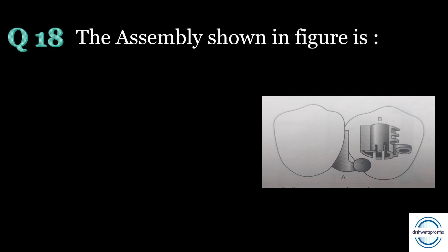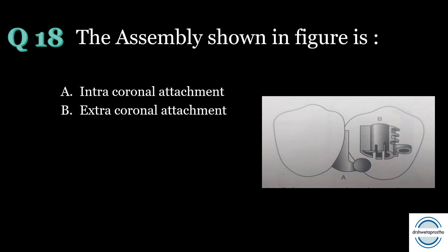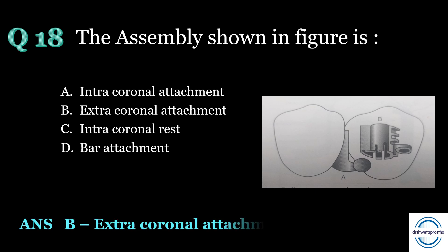Question number eighteen: the assembly shown in the figure is — A. Intracoronal attachment, B. Extracoronal attachment, C. Intracoronal rest, D. Bar attachment. The answer is B, extracoronal attachment. As seen in the picture, it is a Dalbo attachment from McRacken. The Dalbo attachment has an L-shaped male portion attached to the abutment crown and a female sleeve placed in the artificial tooth adjacent to the abutment, with a coil spring allowing some vertical movement of the denture.